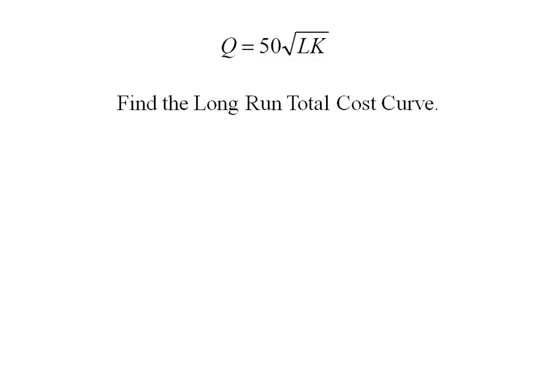Given this particular production function, let's find the long run total cost curve. Long run total cost is the wage times the amount of labor plus the rental rate of capital times the amount of capital. In the long run, both labor and capital can be chosen, so total cost is just a function of output.